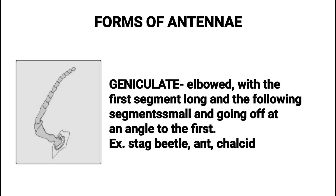Geniculate — elbowed. With the first segment long, and the following segments small and going off at an angle to the first. Examples: Stag Beetle, Ant, and Chalcid.